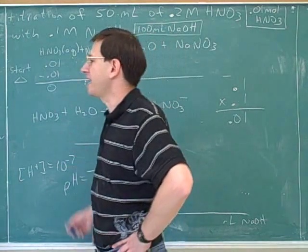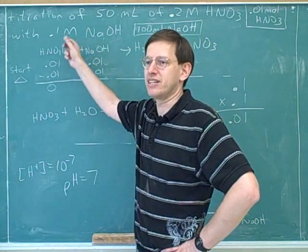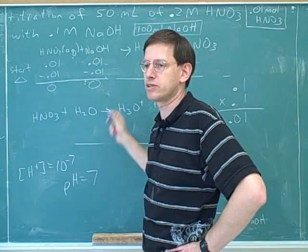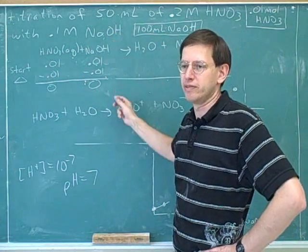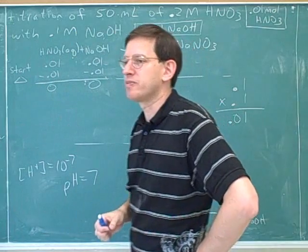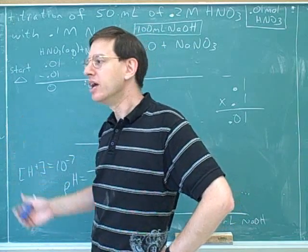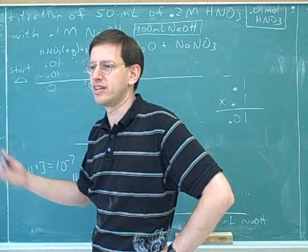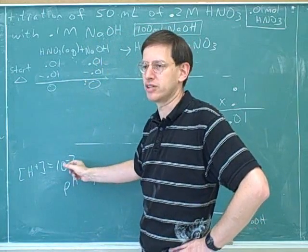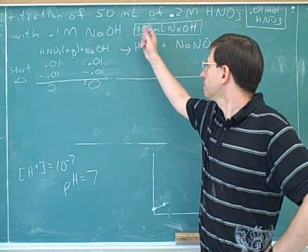This is a problem we can do without any calculations: we're adding exactly as much base as acid, so the base completely neutralizes the acid and we get a neutral solution with pH 7. In previous problems, we ignored the water's hydronium because the acid's hydronium — around 10⁻¹ or 10⁻² — overwhelmed it. But here there's no hydronium from the acid, so we pay attention to the water's 10⁻⁷.